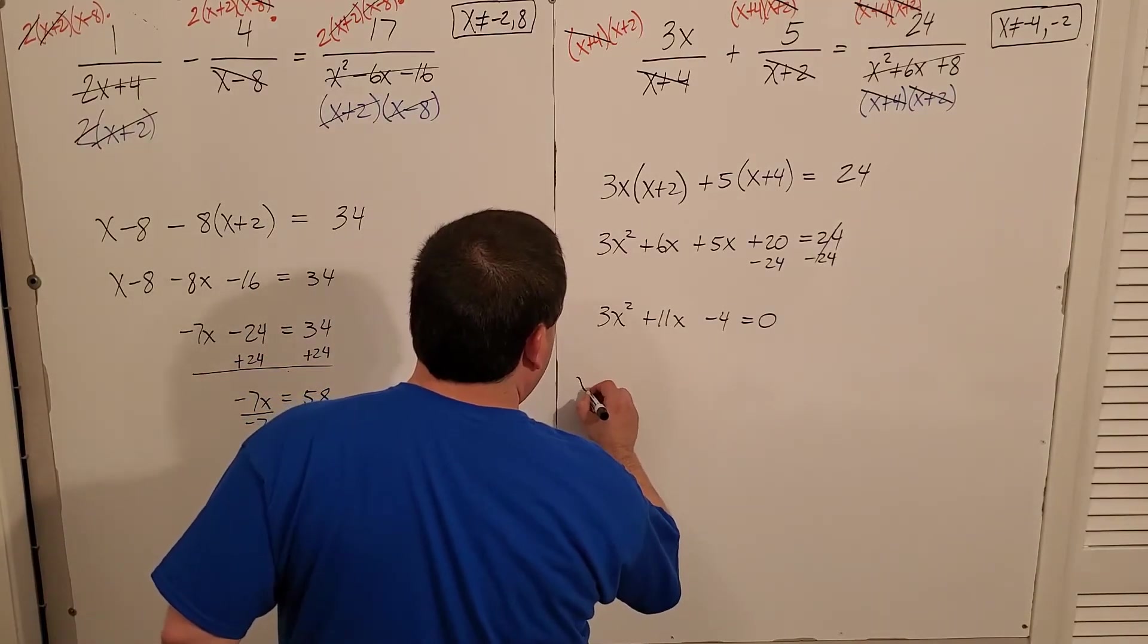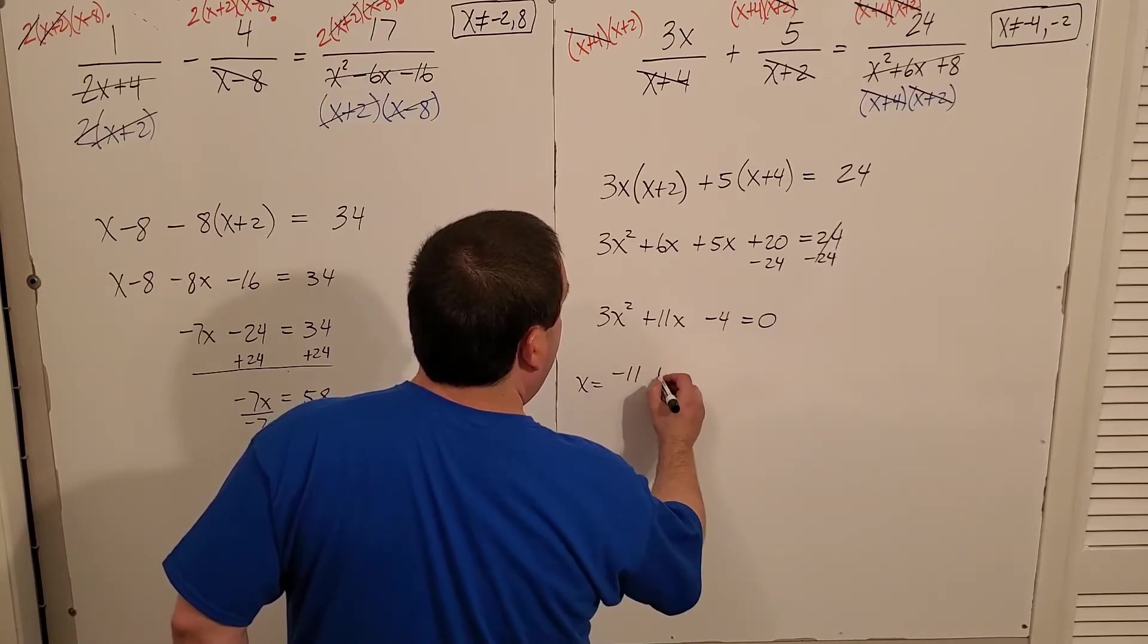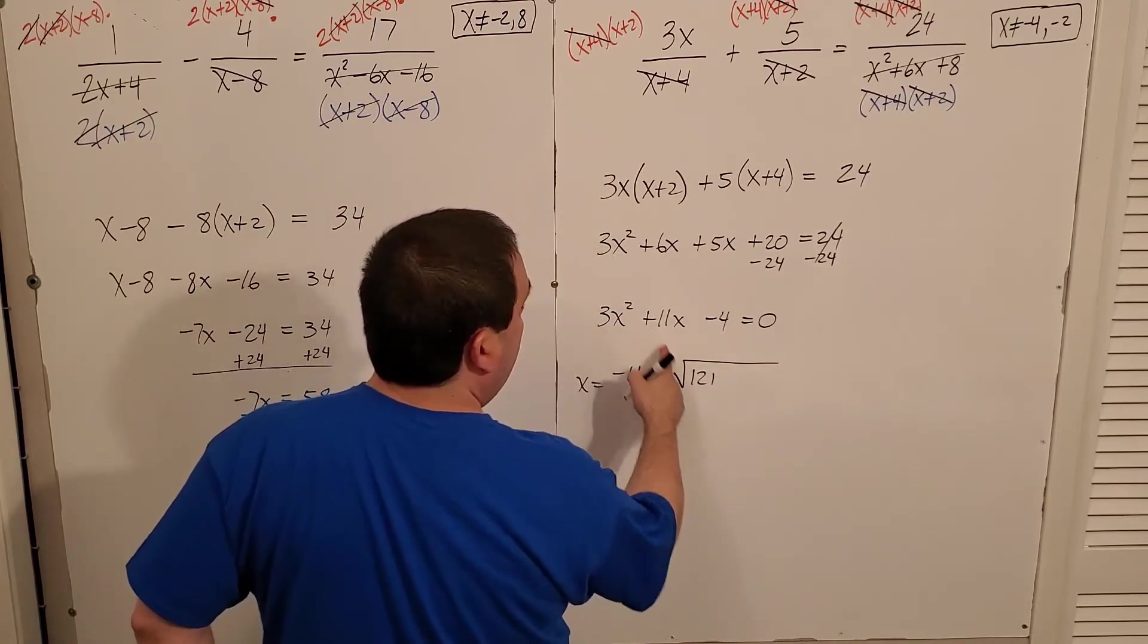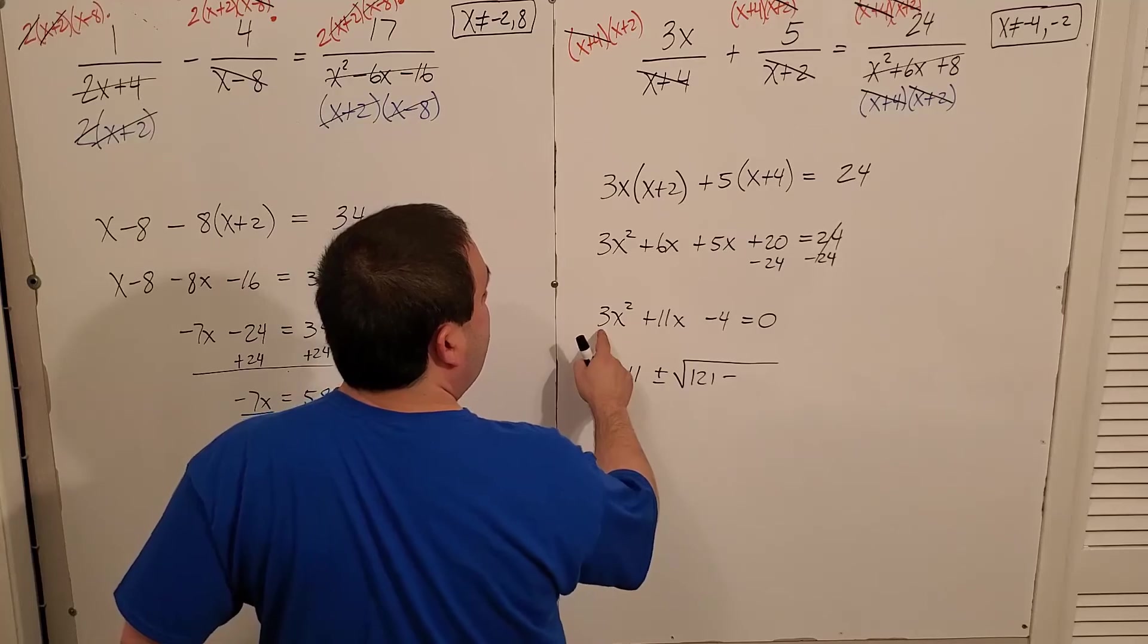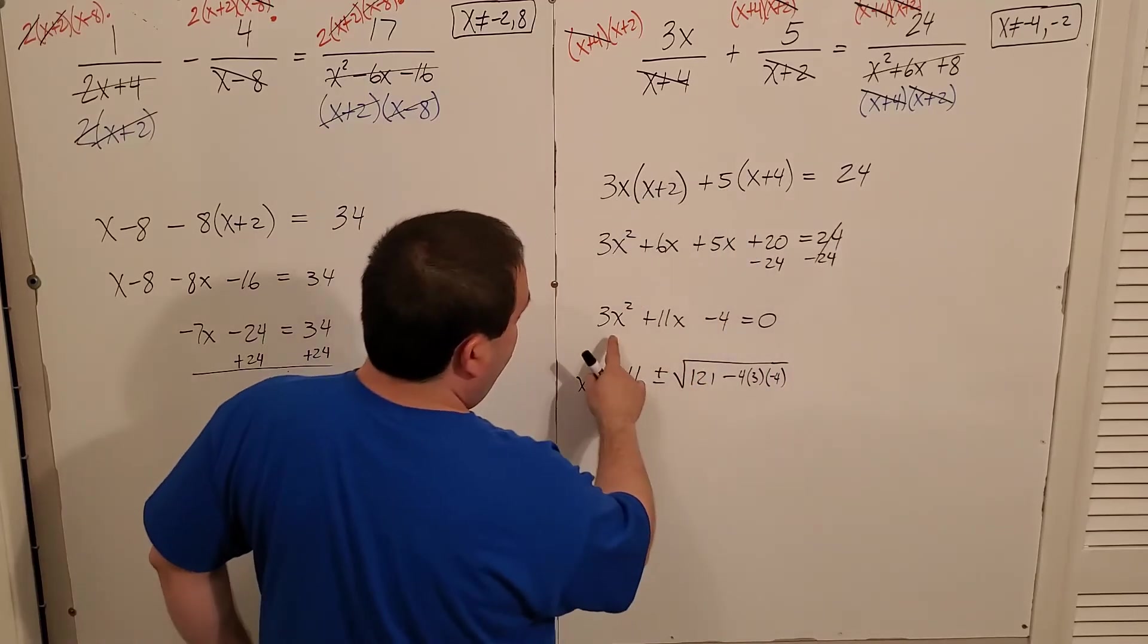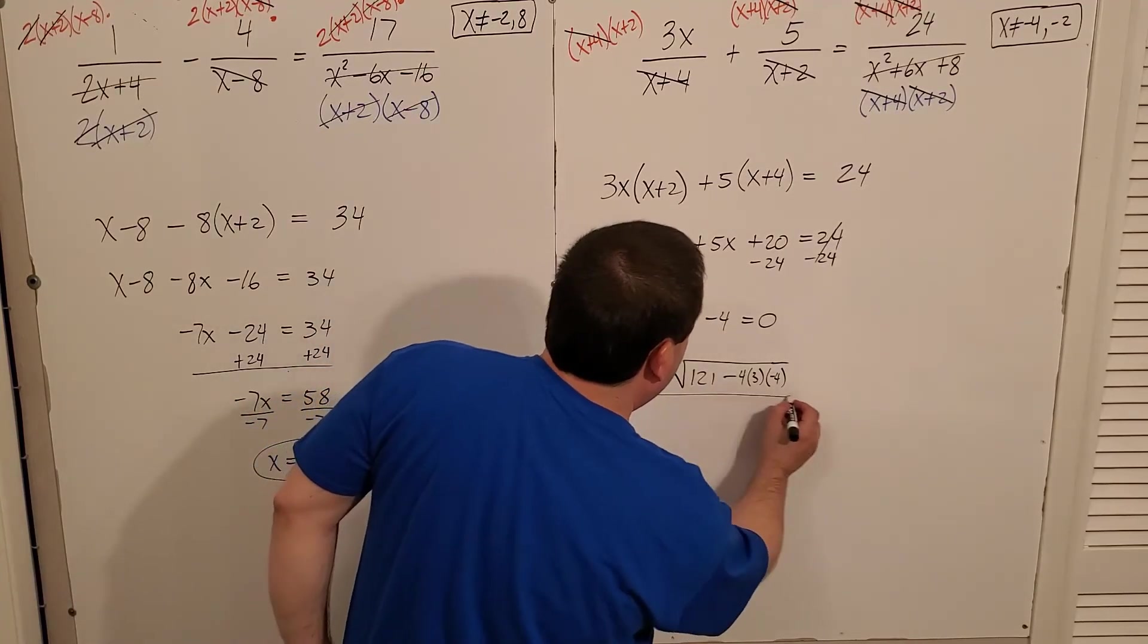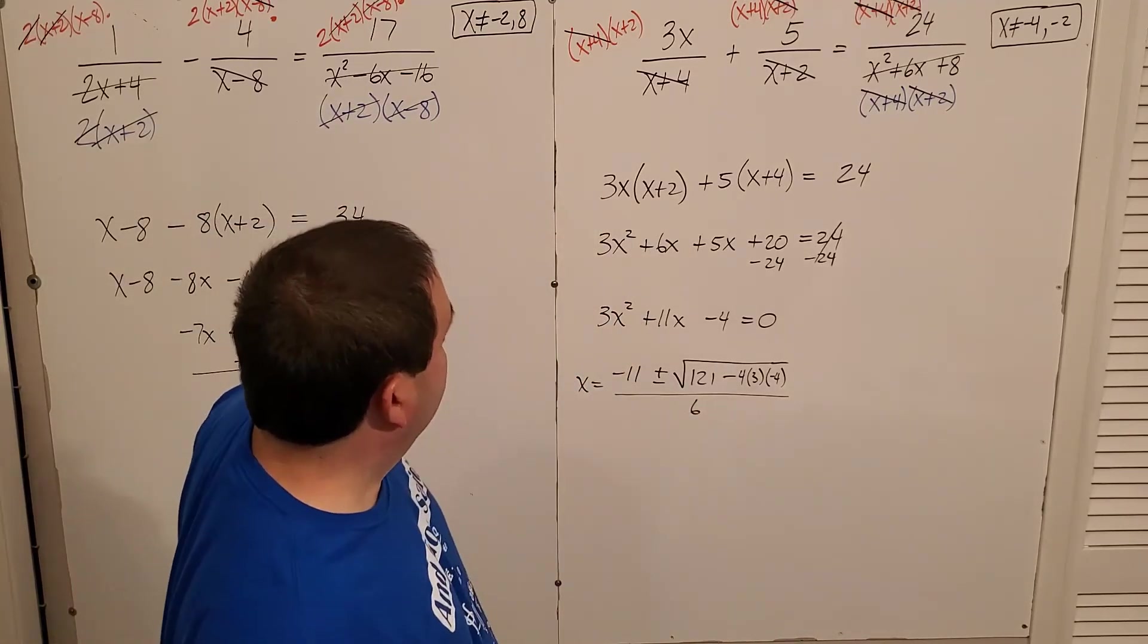So x equals negative b plus or minus square root b squared. So that's 121 because 11 squared minus four times a times c, four times three. I'll just write it out. Four, three, and negative four, right? Four, and then there's a, and then c, don't forget, is negative four. All over 2a. Two times three is six. 2a.